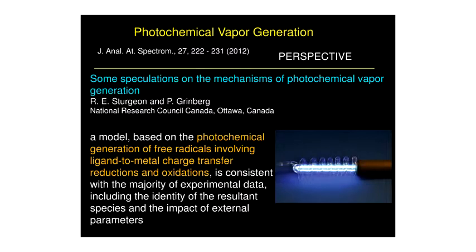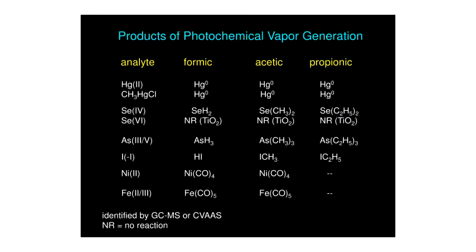We've speculated on the mechanisms of photochemical vapor generation, and we feel that photochemical generation of free radicals is likely what's happening, coupled with ligand-to-metal charge transfer reactions, oxidations, and reductions. The kinds of species formed are organometallic species. In the case of mercury and methylmercury, we find only mercury zero. In the case of selenium four, as we move from formic to acetic to propionic acid, we see the hydrogen radical, methyl radical, or ethyl radical forming the molecular species — similarly with arsenic and with iodine.